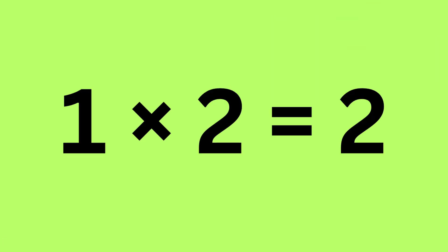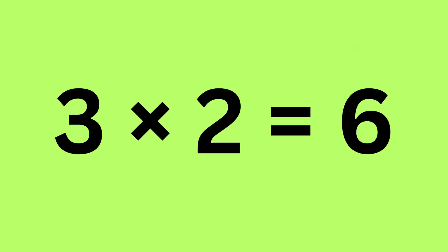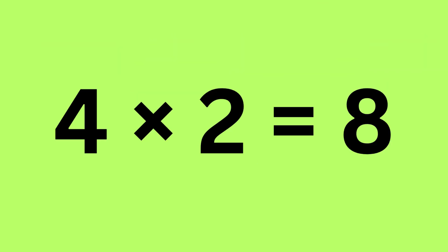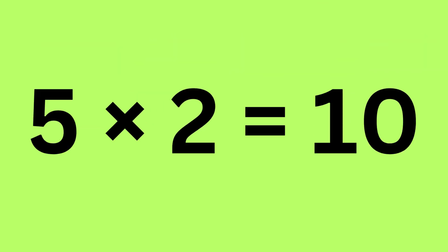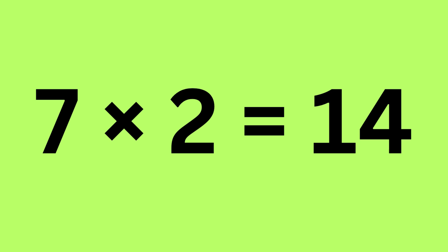1 times 2 is 2, 2 times 2 is 4, 3 times 2 is 6 — are you ready for more? 4 times 2 is 8, 5 times 2 is 10, 6 times 2 is 12 — we are not all done. 7 times 2 is 14.